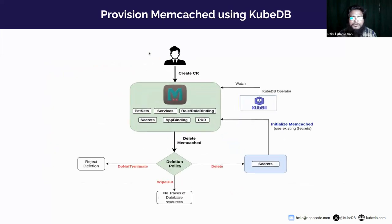Next, we will see how to provision Memcached using KubeDB. When we install the KubeDB operator, the Memcached CRD is installed along with the operator. The KubeDB operator watches the Memcached CRD, so when a user creates, deletes, or updates the Memcached custom resource, the Memcached operator will create and manage the Memcached database. To do this, you need a set of Kubernetes components, and the KubeDB operator will create each one of them.